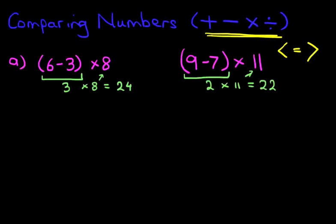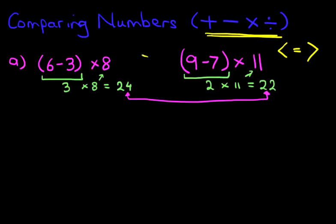So we are now comparing — I'll just change colours for this — 24 with 22. Which number is smaller: is it 24 or 22? It's nice and easy. So this statement, this example, now reads: 6-3 in brackets times 8 is greater than 9-7 in brackets times 11. You can also use the terminology of open brackets and closed brackets.